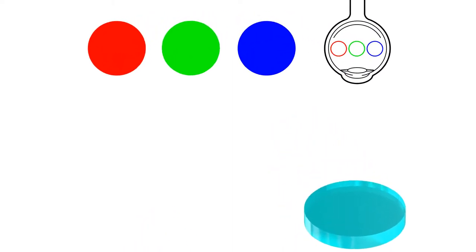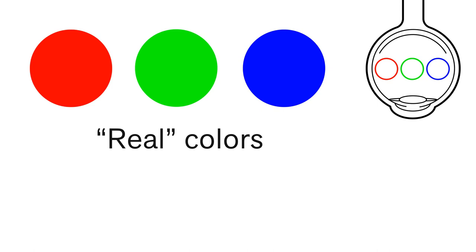The artist calls red, green, and blue real colors. These are the specific colors that can be directly observed by the human eye.